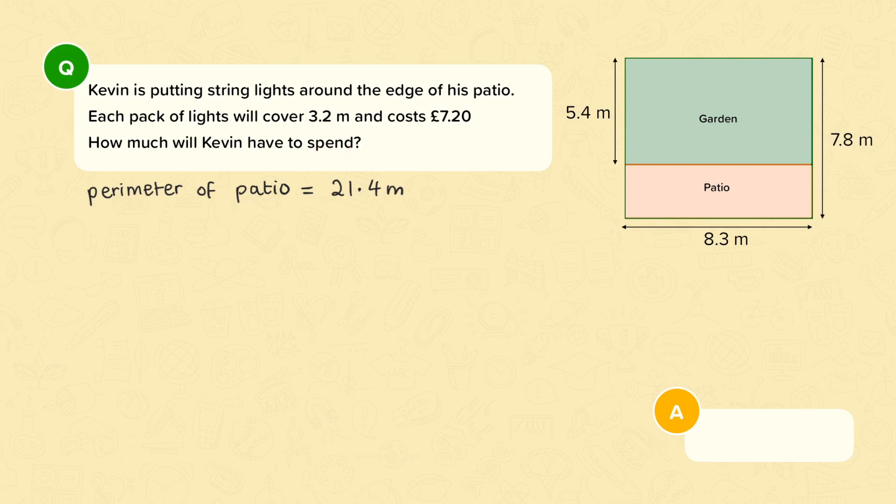Now the first thing to do is work out how many packs of lights Kevin will need. Remember you're going to need to use the fact that each pack covers 3.2 metres. And we have 21.4 metres to cover in total. So pause the video now and work out how many packs of lights you will need. Press play when you're ready to check your answer.